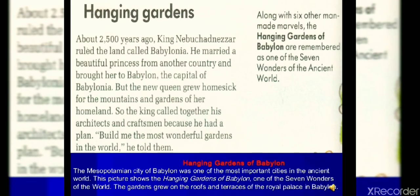About 2,500 years ago, King Nebuchadnezzar ruled the land called Babylonia. He married a beautiful princess from another country and brought her to Babylon, the capital of Babylonia. But the new queen grew homesick for the mountains and gardens of her homeland. So the king called together his architects and craftsmen and said: 'Build me the most wonderful garden in the world.' Along with six other man-made marvels, the Hanging Gardens of Babylonia are remembered as one of the Seven Wonders of the Ancient World.